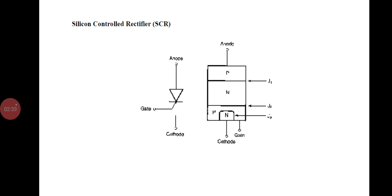Now we can see the silicon controlled rectifier, that is SCR. There are three terminals: anode (P-type), cathode (N-type), and gate (P-type near the cathode). The SCR is a semiconductor device that acts as two electronic switches. It can change alternating current and at the same time control the amount of power fed to the load. SCR combines the features of a rectifier and a transistor.